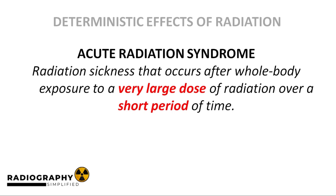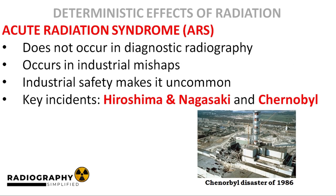Acute radiation syndrome is a form of radiation sickness which occurs in humans after an individual has received a large whole-body exposure to ionizing radiation over a short period of time. To reiterate, acute radiation syndrome is not something that occurs in routine radiography. A high radiation dose exposure is required to cause it. This is why it is more likely to be encountered in industrial and environmental accidents or mishaps.